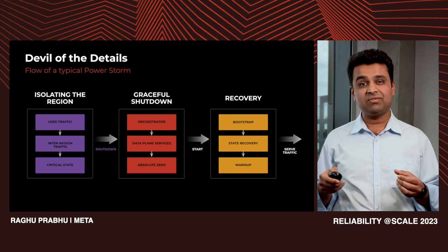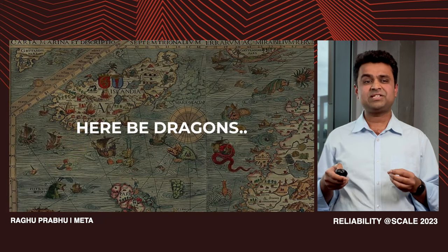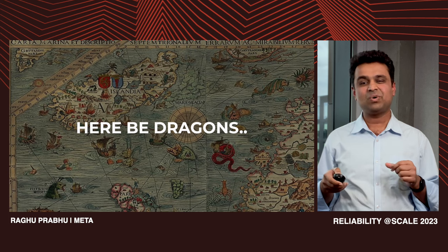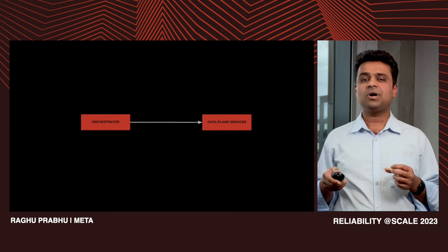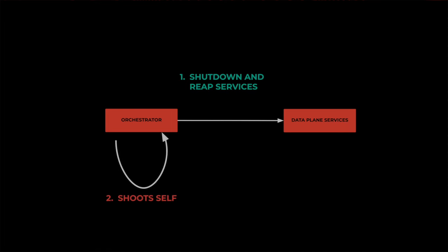Since our first power storm in 2022, we have executed multiple full-scale power storms. No discussion of DR exercises is complete without discussing the dragons encountered while entering this new uncharted territory. During our storm, we encountered an issue arising from interactions between the regional orchestrator and the data plane, which complicated and delayed the recovery process. It started when the orchestrator shut down and reaped data plane services through the asynchronous signaling mechanism — but the signal led to the orchestrator itself becoming unavailable due to its critical dependencies being reaped and shut down.